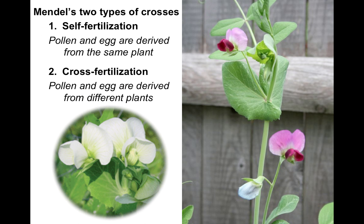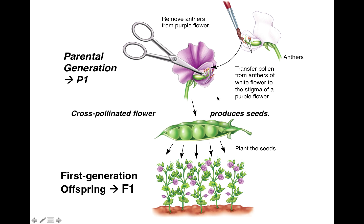Mendel's two types of crosses were self-fertilization and cross-fertilization. Self-fertilization occurs when the pollen and the egg are derived from the same plant, but cross-fertilization uses pollen and eggs from different plants. He used both of these strategically to come up with his laws of inheritance. A flower has a stigma which produces a seed, and it has anthers that produce pollen that land on the stigma and travel down, creating a pollen tube and then fertilize the ovule in the flower, ending up producing a seed.